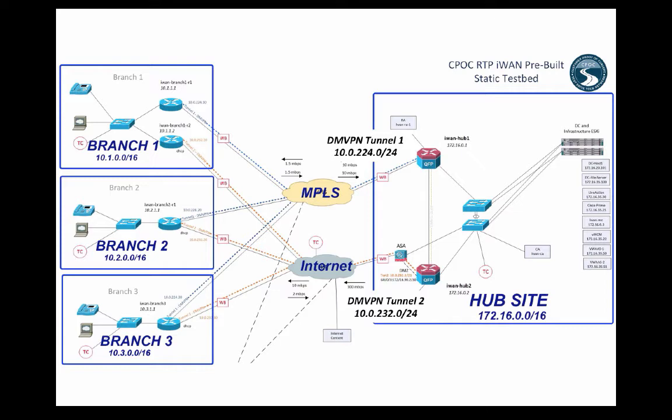The router below that, connected to the internet, is my DMVPN internet hub — tunnel two on that ASR 1002. So it's DMVPN tunnel two, 10.0.232.0/24 for the MGRE subnet for everyone connected to that DMVPN tunnel, and dot one again for my iWAN hub.